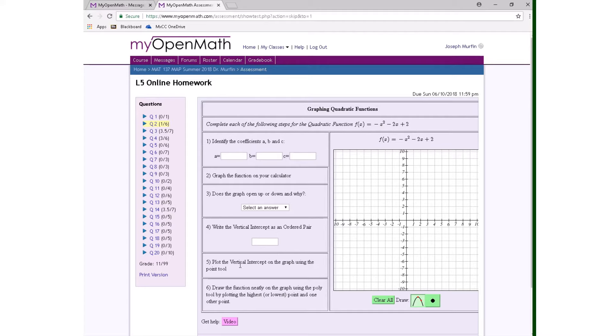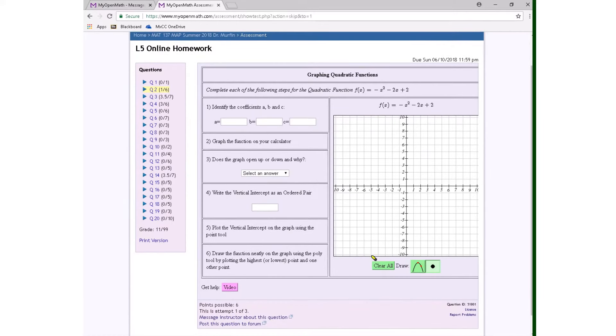Now, just make sure that you follow the instructions exactly. It says here that you need to plot the vertical intercept on the graph using the point tool, and then you need to draw the function using the poly tool by plotting the highest or lowest point. So this is going to be the vertex, and one other point. It's okay if this other point is the vertical intercept. I'm just going to do this a little out of order to show you what you might do incorrectly.